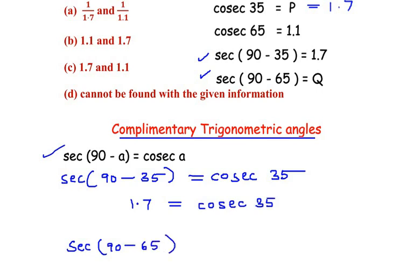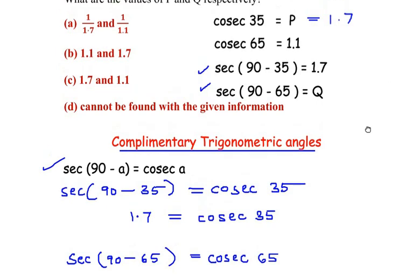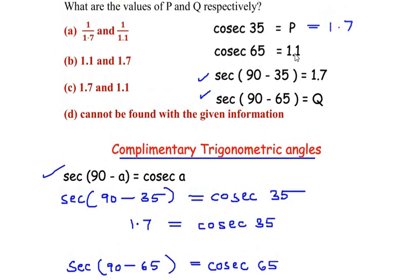So that is going to be equal to cosec of 65. Now we do not know the value of sec 90 minus 65, but we know the value of cosec 65 which is 1.1.